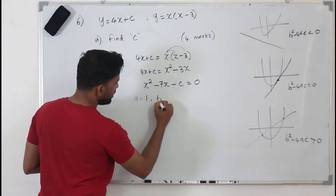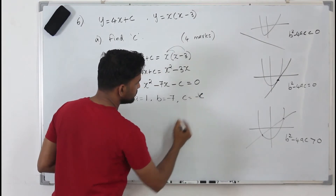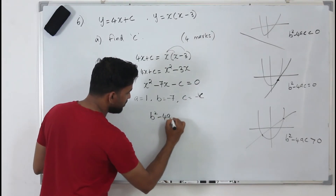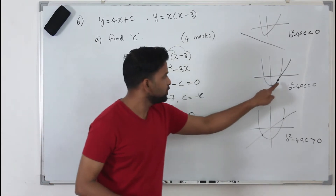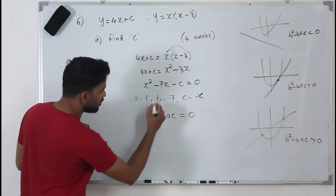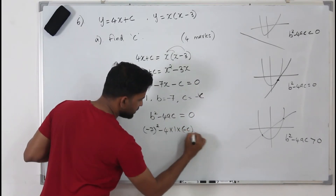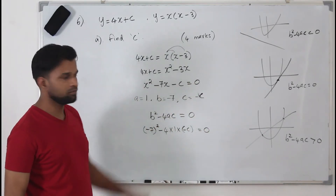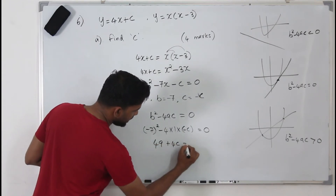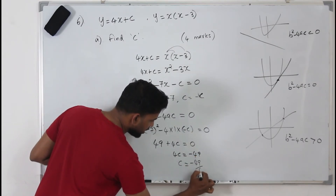From our quadratic x squared minus 7x minus c equals 0, the coefficient a is 1, b is minus 7, and the constant term c here is minus c. Setting the discriminant equal to 0: minus 7 squared minus 4 times 1 times minus c equals 0, which gives 49 plus 4c equals 0. So 4c equals minus 49, and c equals minus 49 over 4.